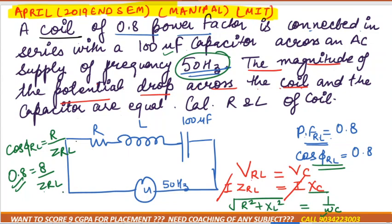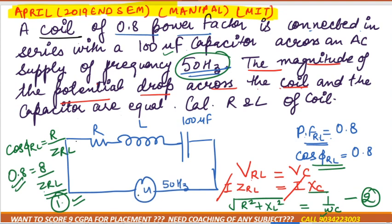We have 2 variables and 2 equations. We can substitute Z_RL as root of R squared plus X_L squared. One equation comes from V_RL equals V_C, and another from the power factor. Solving these 2 equations gives us the values of R and X_L, and from X_L we will get the value of L.